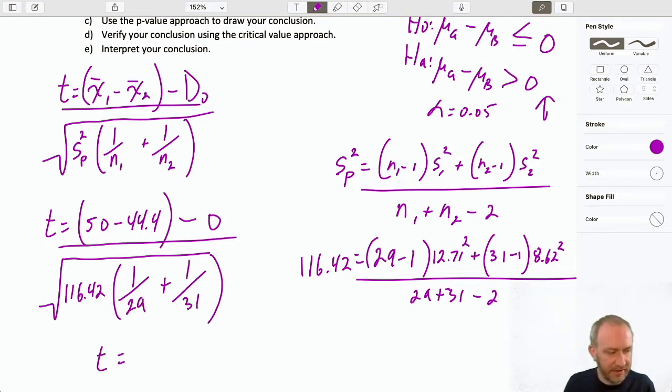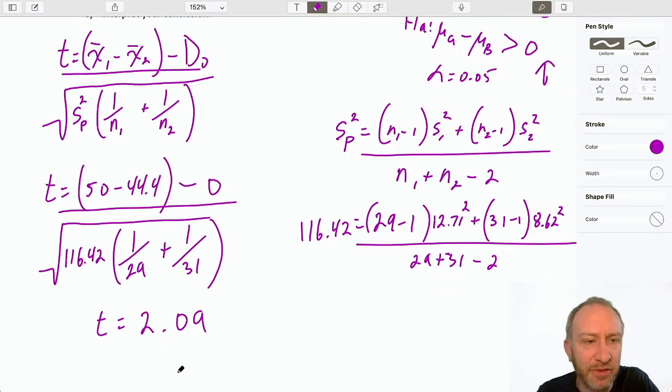So, my test statistic here is going to be (50 - 44.4) divided by the square root of 116.42 over (1/29 + 1/31). And, that gives me my test statistic of 2.09. I am rounding it just ever so slightly.